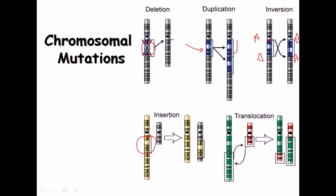Translocation means swapping of segments between chromosomes. Unlike insertion — where a segment is cut from one chromosome only — in translocation, both chromosomes are cut and their segments are swapped with each other. For example, a segment from the red chromosome binds with the green, and a segment from the green binds with the red. This does not necessarily mean equal amounts are exchanged; the green chromosome may contribute a longer segment than the red.